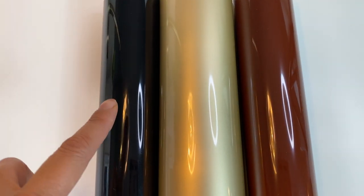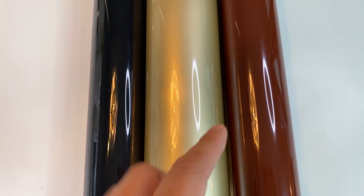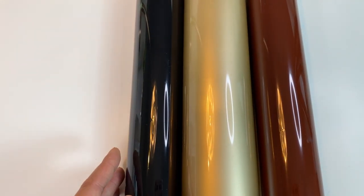Cricut Everyday Iron-On: I got black for the belt, gold for the buckle, and brown for the buttons. This I just used half, this about one and a half, and these about almost two rolls.